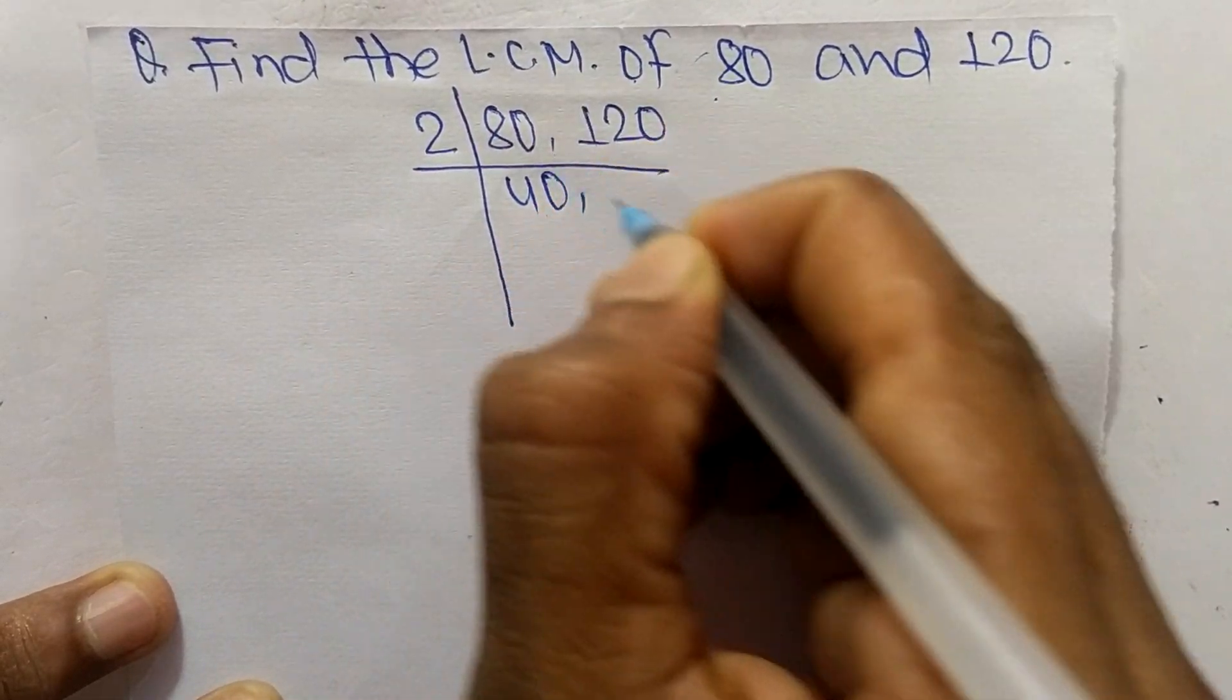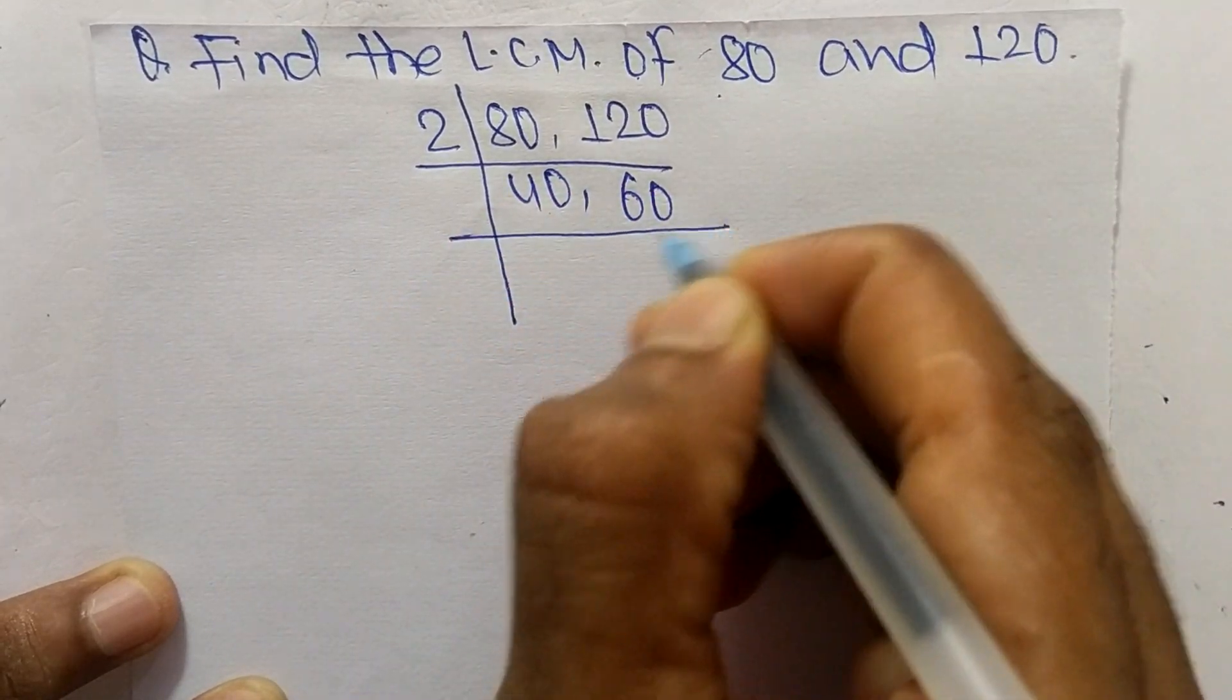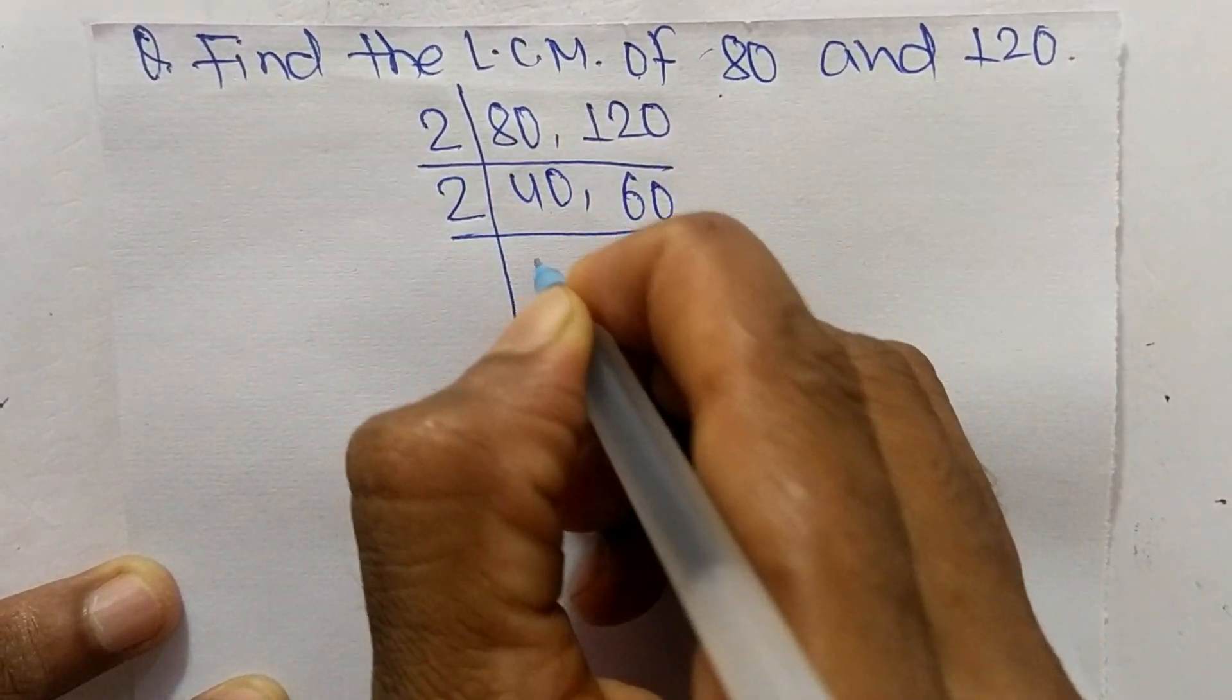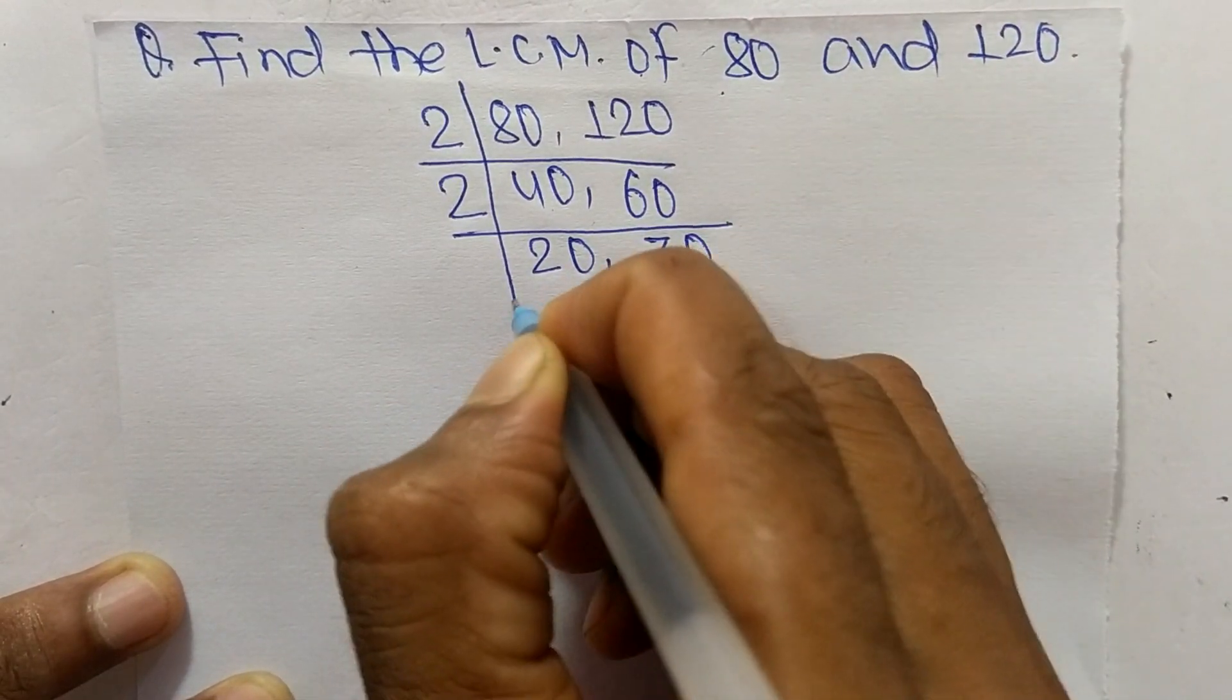So 2 times 40 equals 80, 2 times 60 equals 120. Again it is divisible by 2. So 2 times 20 equals 40, 2 times 30 equals 60.